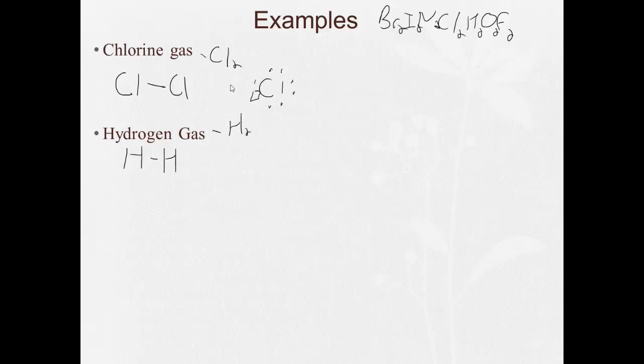Well, chlorine has seven valence electrons, so it's really only room for one more. It comes along the other chlorine with seven valence electrons, really only room for one more. So they decide to share just these two electrons, making that a single bond.